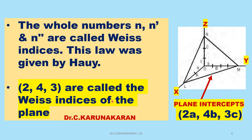For example, for the plane L, M, N, the Weiss indices are 2, 4, 3, corresponding to the intercepts along the three crystallographic axes.